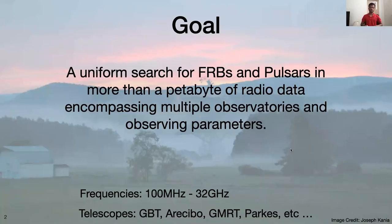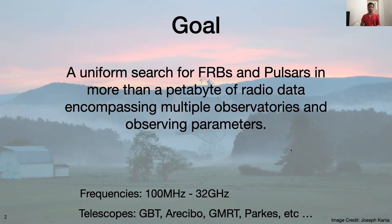The goal of this project is to perform a uniform search for FRBs and pulsars in more than a petabyte of radio data encompassing multiple observatories and observing parameters. We expect to search frequencies starting from 100 megahertz to as high as 32 gigahertz or even higher if we can get that high frequency data. The data would be from various telescopes: GBT, Arecibo, Parkes, and various others.